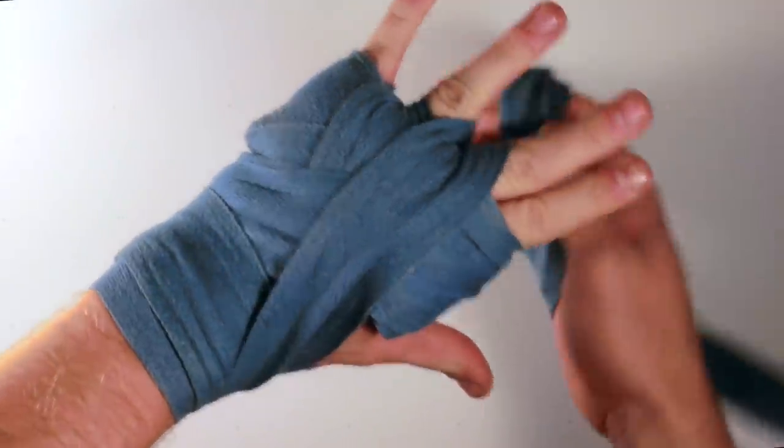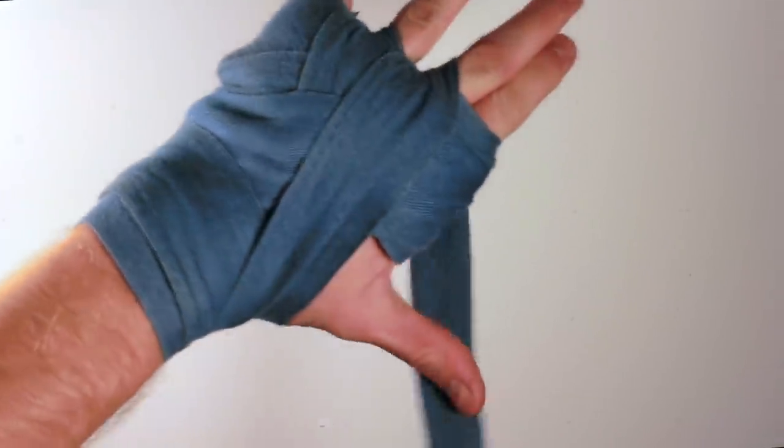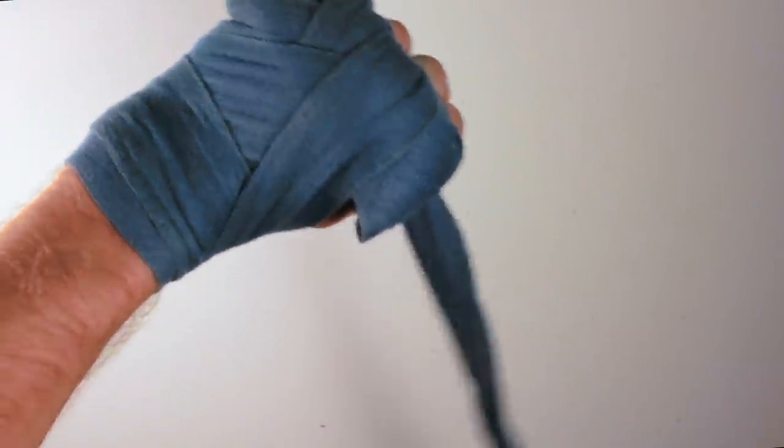And then from there, we're going to go up across the back of the hand to the next set of fingers, the middle set. Again, we come across to the index and thumb again. We make that fist as we come across the back of the hand, again around the wrist.